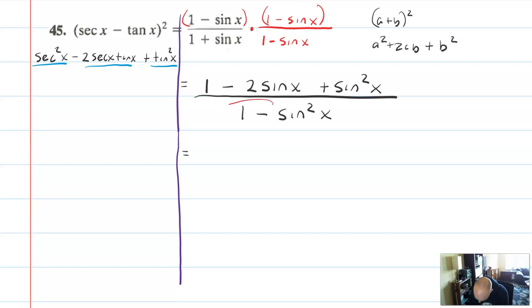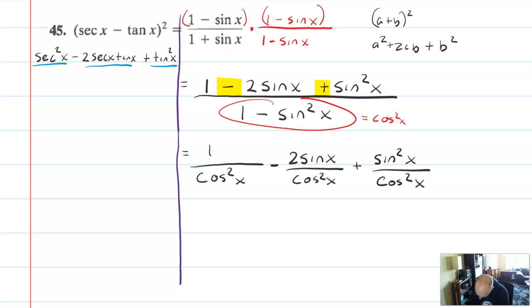Then what I immediately notice is that that bottom part is going to equal cosine squared x. That's the identity. Since I know that's cosine squared x, I also want to split these fractions apart. So I'm going to have 1 over cosine squared x minus 2 sine x over cosine squared x plus sine squared x over cosine squared x.